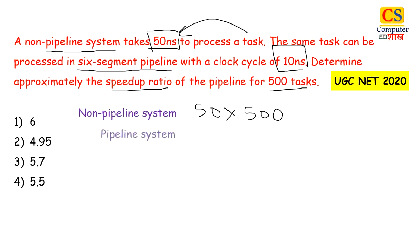Next, let's look at the pipeline case. In the pipeline case, we have 6 segments, 10 nanoseconds clock cycle and 500 tasks. How do we solve the pipeline? The number of tasks plus the number of segments minus 1.